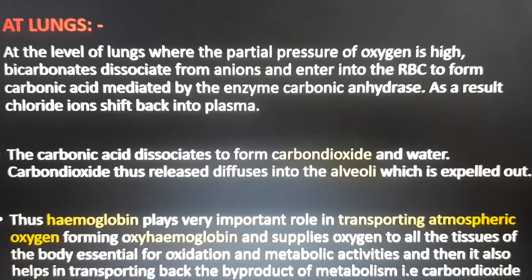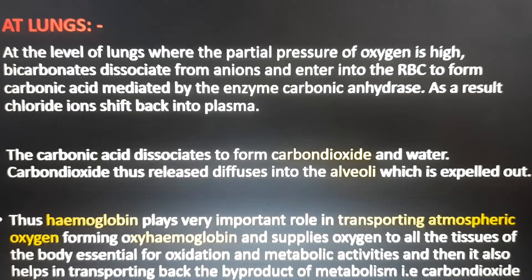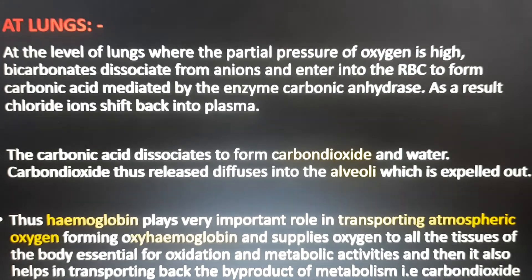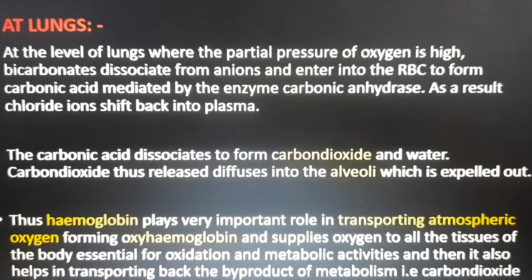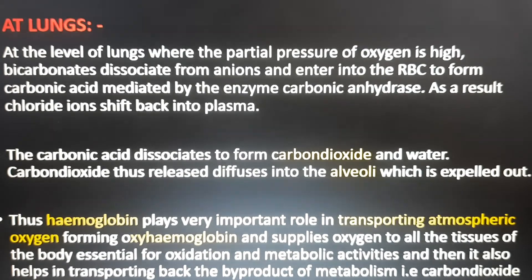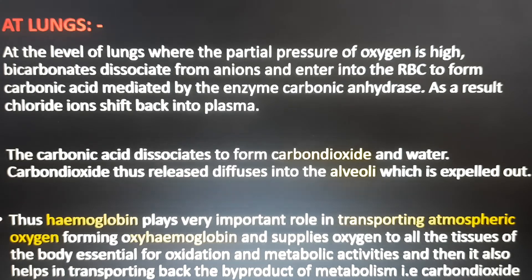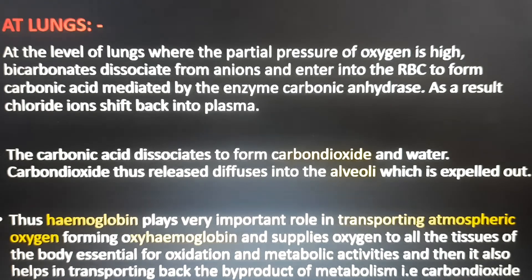At the level of the lungs, where the partial pressure of oxygen is high, bicarbonates dissociate from anions and enter into the RBC to form carbonic acid, mediated by the enzyme carbonic anhydrase. As a result, chloride ions shift back into the plasma. The carbonic acid then dissociates to form carbon dioxide and water, and the carbon dioxide thus released diffuses into the alveoli and is expelled out.